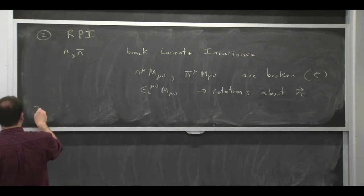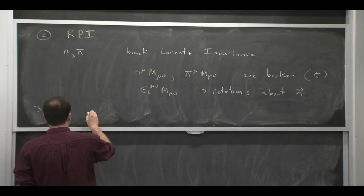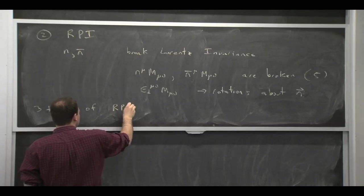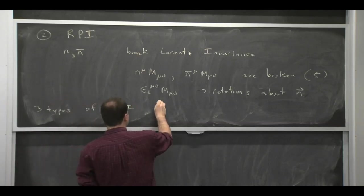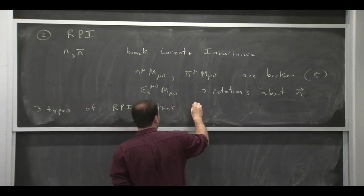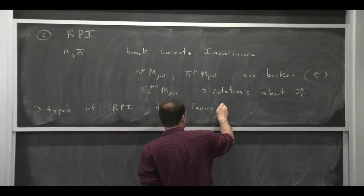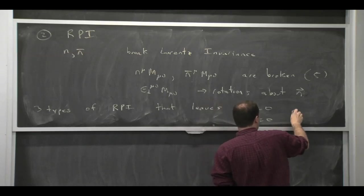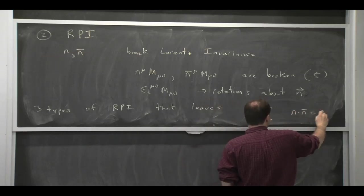And let's first talk about just the n and n bar themselves. There's three types of reparameterization invariance that would leave n squared equals zero, n bar squared equals zero, and n dot n bar equals two.